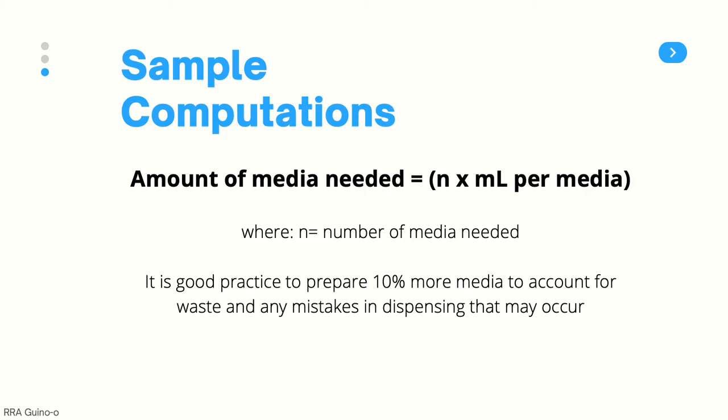Once you have established what kind of media you will be creating, you can now compute for the amount of media needed. The equation is n times milliliters per media, where n is the number of pieces of media that you want to create. It is good practice to prepare 10% more media than you actually need to account for any waste or mistakes in the dispensing of media that occurs later on.